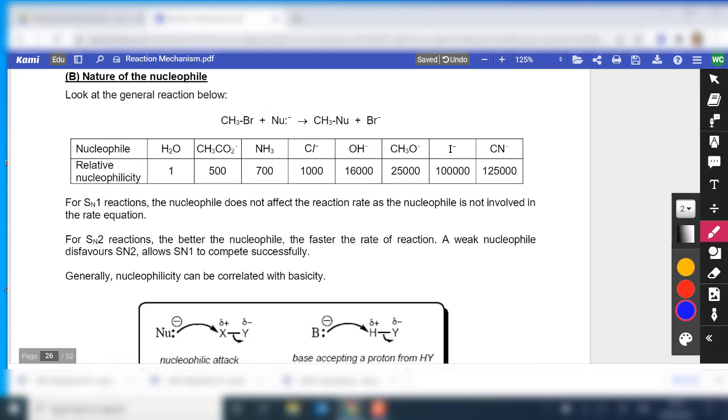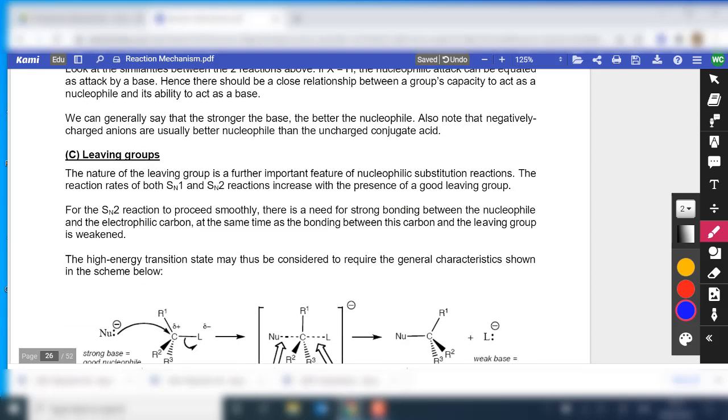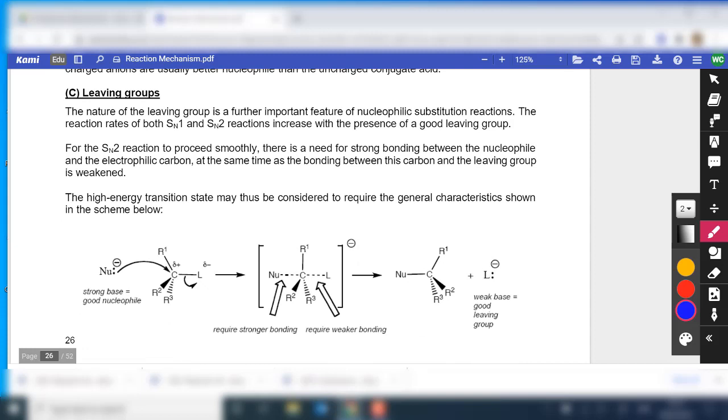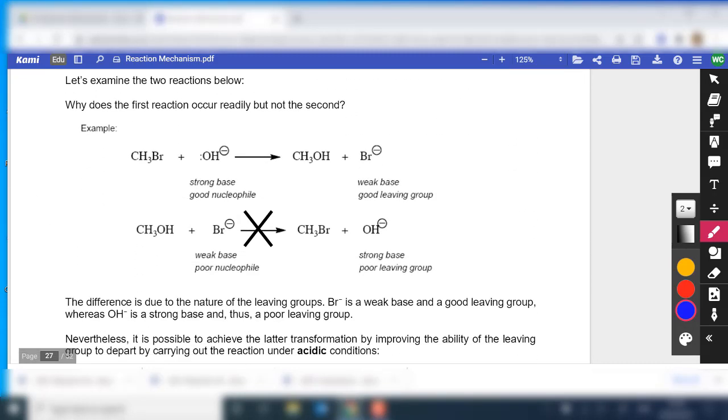Nature of nucleophile, we have discussed in some details, so I don't think I want to go through it again. I can just go through activity 4. Nature of the leaving group, we have also discussed in some details. For leaving group, there are resonance stabilized. They tend to leave.